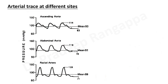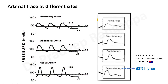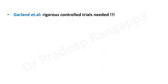Another caveat is that arterial line readings differ by site. A study from Australia showed that femoral artery blood pressure recordings were 63% higher compared to radial artery, meaning interpretation depends on where the line is placed. Garland et al. suggested that to conclusively subscribe to placing arterial lines, rigorous controlled trials are needed to substantiate by evidence whether arterial lines can make a difference in patient outcomes.